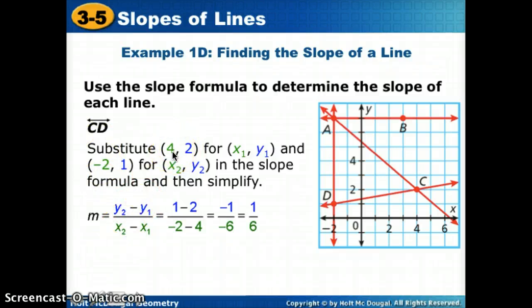1 minus 2 over negative 2 minus 4. So if you had done it in a different order, we'd still end up with the same answers. So 1 minus 2 gave us negative 1. Negative 2 minus 4 gives us negative 6. Any time we take a negative divided by a negative, that's going to change to a positive 1 sixth.